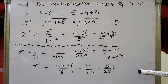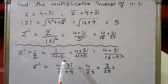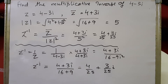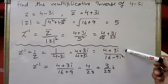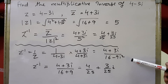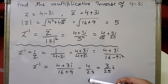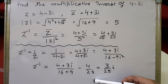There is another method: z inverse can be written as 1 upon z. Since z equals 4 minus 3i, we have 1 upon 4 minus 3i. We multiply numerator and denominator by the conjugate 4 plus 3i. The numerator becomes 4 plus 3i, and the denominator becomes 4 minus 3i times 4 plus 3i, which equals 16 minus 9i squared. Since i squared equals minus 1, this becomes 16 plus 9 equals 25. So z inverse equals 4 plus 3i upon 25, giving 4 upon 25 plus 3i upon 25. Please note down the solution.